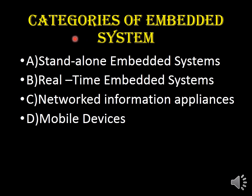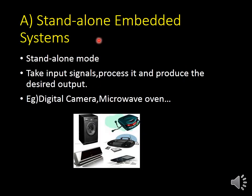Next, we are going to see the categories of embedded systems. There are four categories: one is standalone embedded system, the second is real-time embedded system, the third is network information appliances, and the fourth is mobile devices. The standalone embedded system operates in standalone mode — it takes input signals, processes them, and produces the desired output. Examples are digital camera, microwave oven, and CD player.